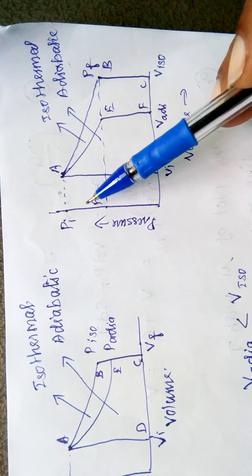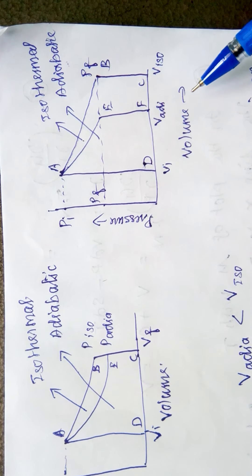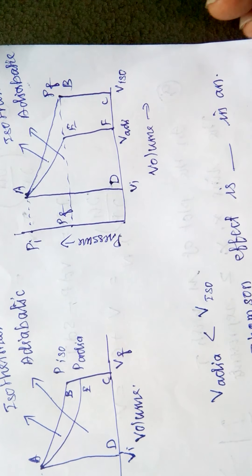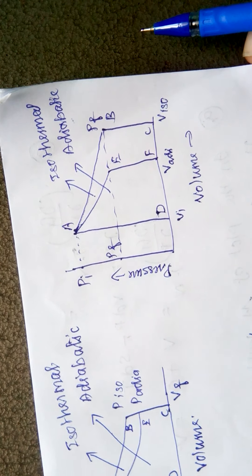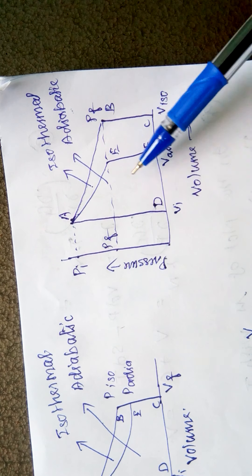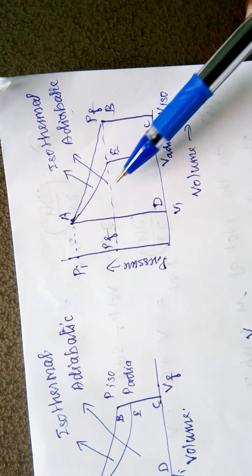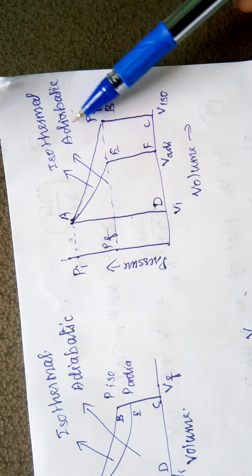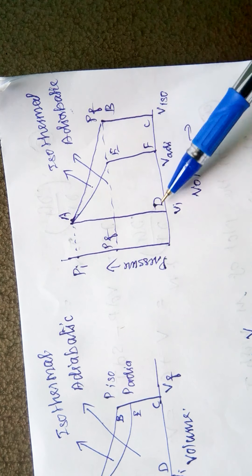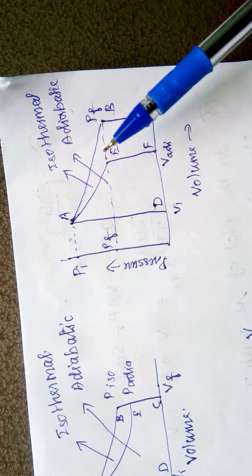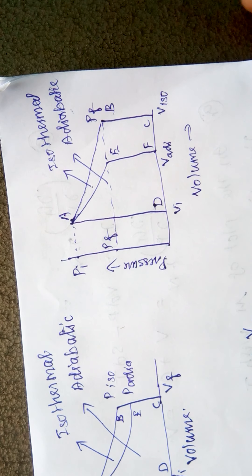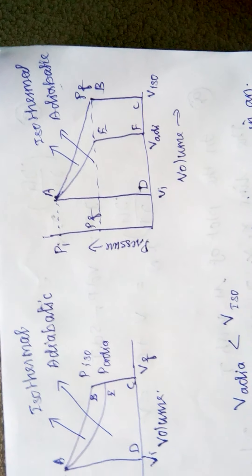In the graph, pressure is on the y-axis and volume is on the x-axis. The adiabatic expansion volume and isothermal expansion volume are shown. The work done in the adiabatic expansion (area AEFD) is smaller than the work done in the isothermal expansion (area ABCD). So the work done in adiabatic expansion is lower than in isothermal expansion. Questions are asked based on these concepts.